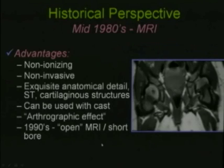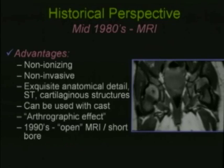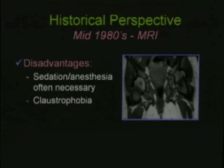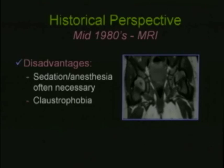MRI is also a modality used for hips — non-ionizing, non-invasive, providing exquisite anatomic detail of soft tissues and cartilaginous structures, usable with a cast. However, in young children it requires sedation and anesthesia, older children may have claustrophobia, it is not cost-effective, and most centers don't have time to screen hips with MRI.